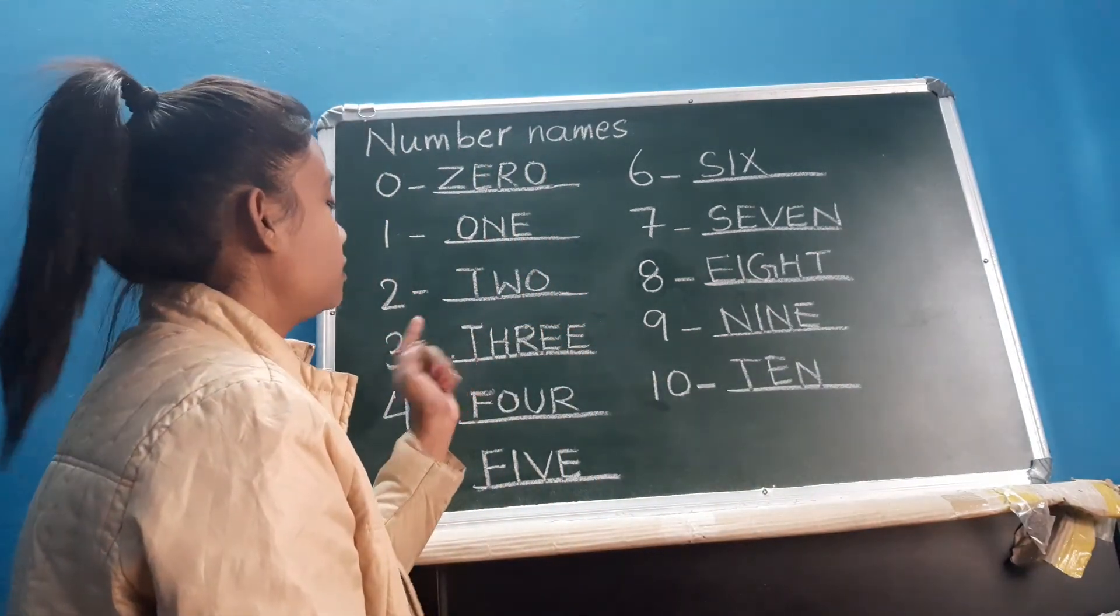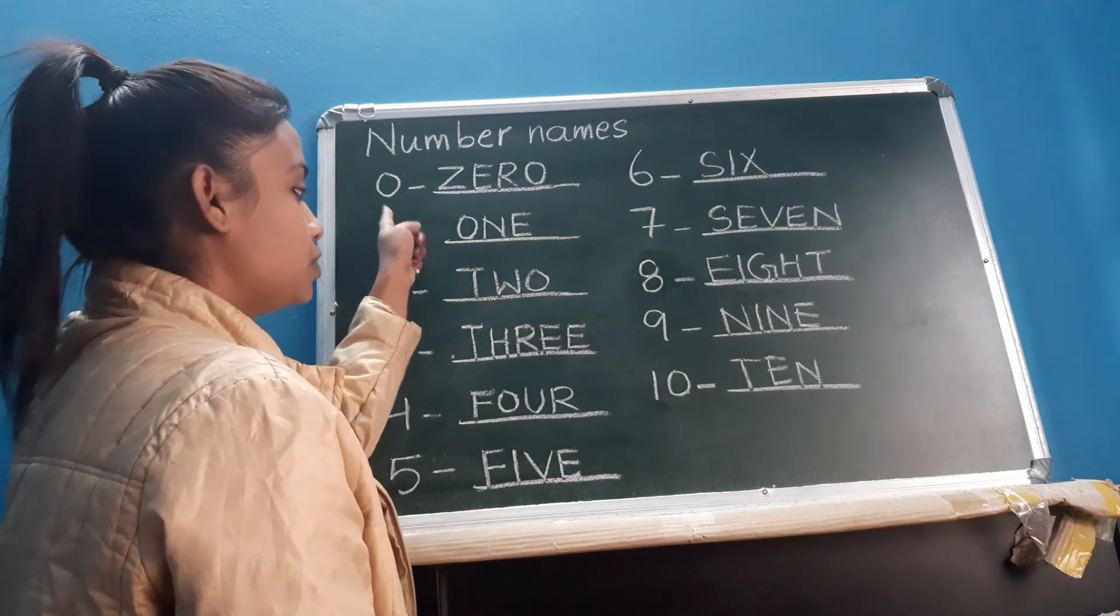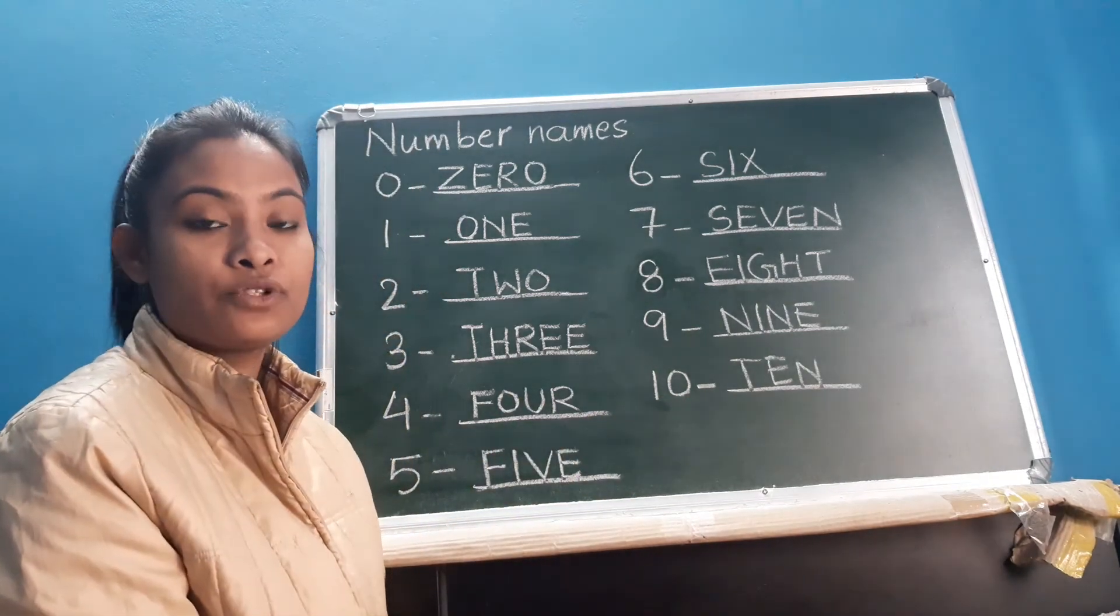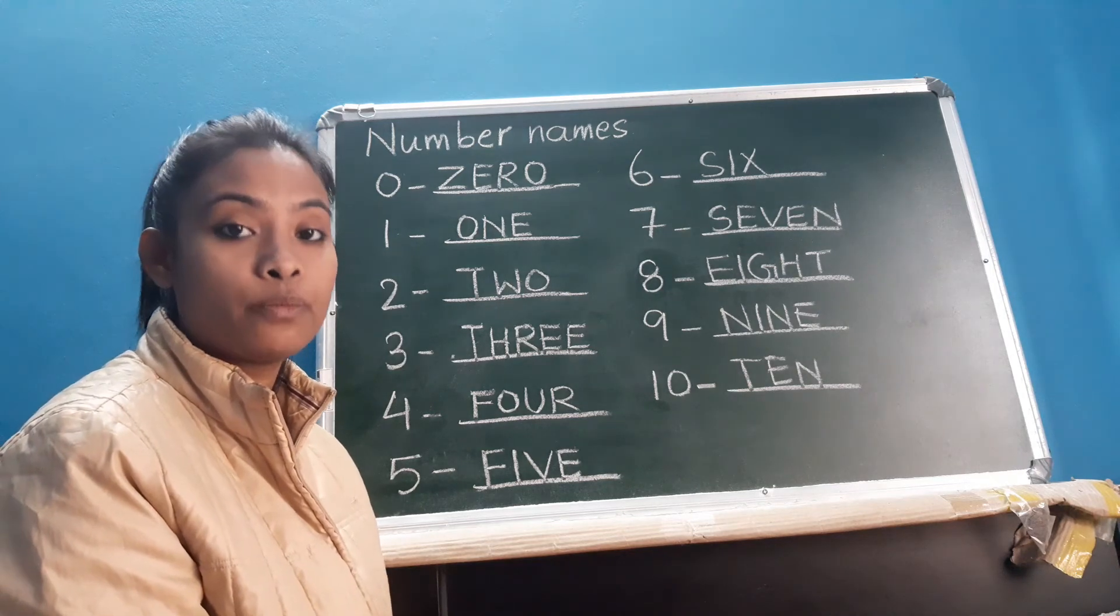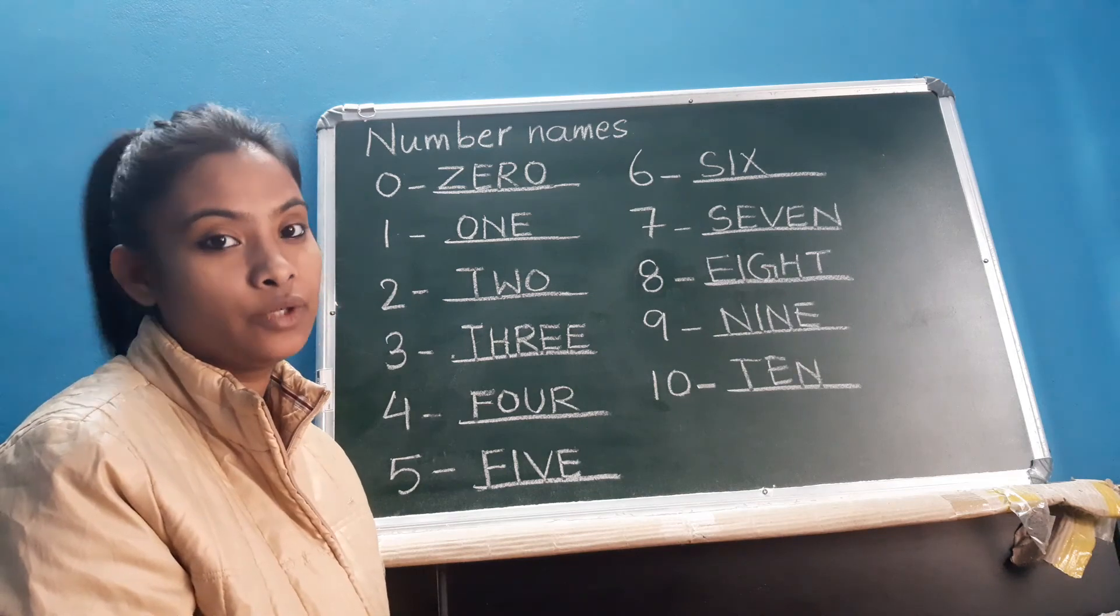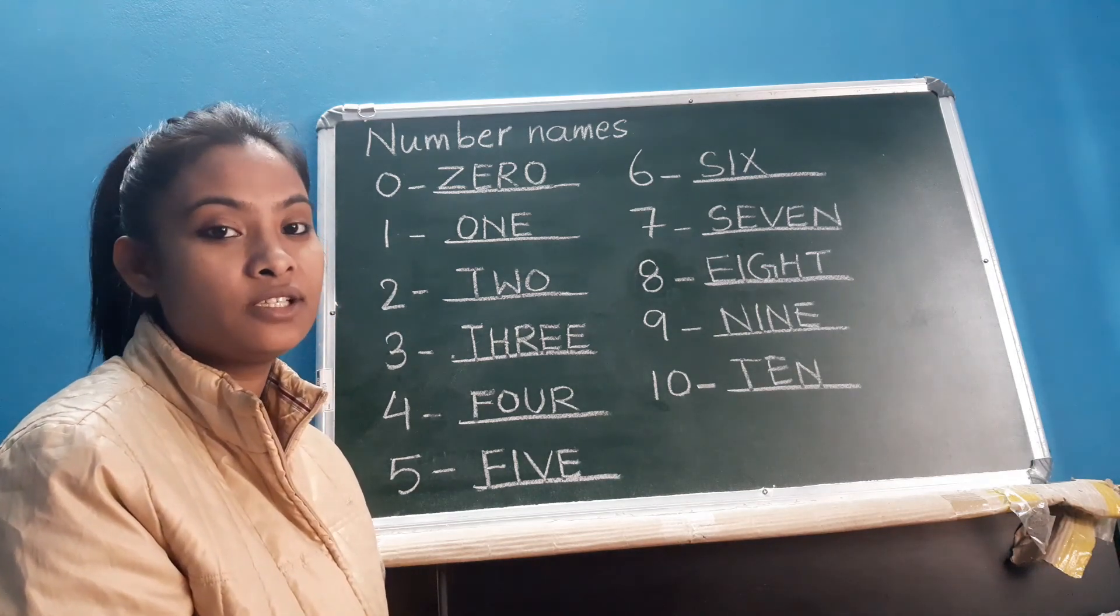Okay children, these are the number names starting from 0 to 10, alright? And this you have to write in your math homework copy. You have to write this in your math homework copy, okay? I'll send you the details till then.